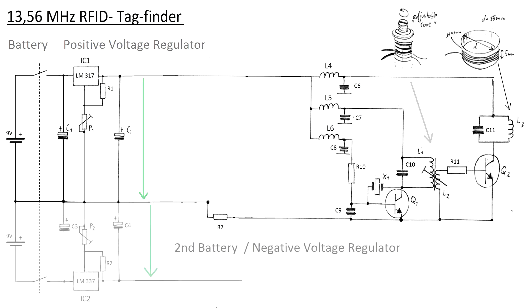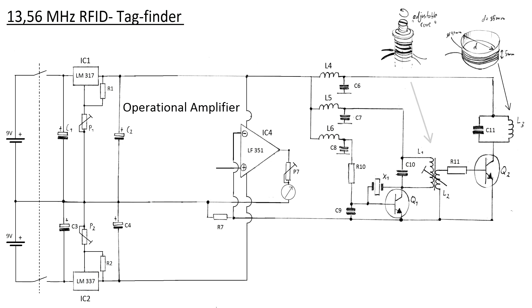In addition, a negative supply rail is needed for an operational amplifier type LF351. A meter, which should allow positive as well as negative readings, is then connected to the op-amp's output pin.